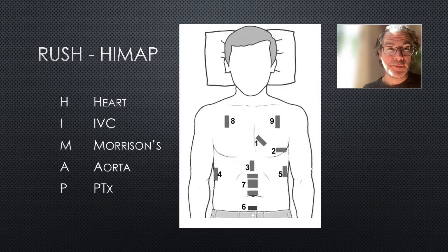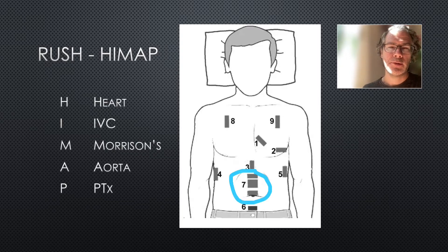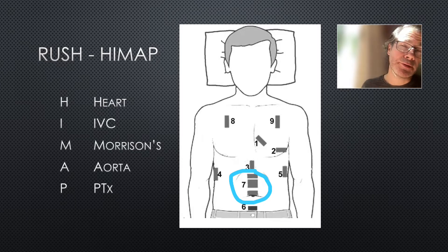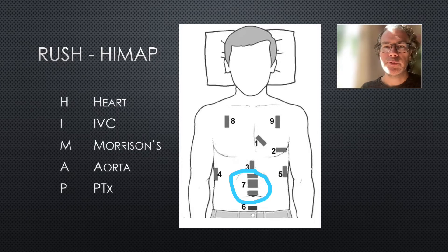The fourth part of the HIMAP exam is A for aorta — scanning the whole abdominal aorta from xiphisternum down to bifurcation. Again, I didn't think this was relevant in my case: it's a 15-year-old with no abdominal pain, so I skipped this part of the exam.